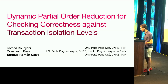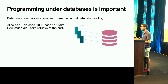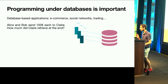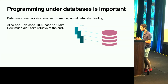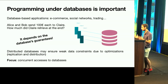Nowadays, applications such as e-commerce, social networks, or trading employ databases in the software. However, what the programs actually do is not always clear. For example, if Alice and Bob each send 100 euros to Claire, how much money did Claire receive at the end? We expect 200, but it actually depends on the database guarantees, because distributed databases may ensure weak data constraints due to optimizations — they are replicated and distributed — so we have to focus on concurrent access to the database.